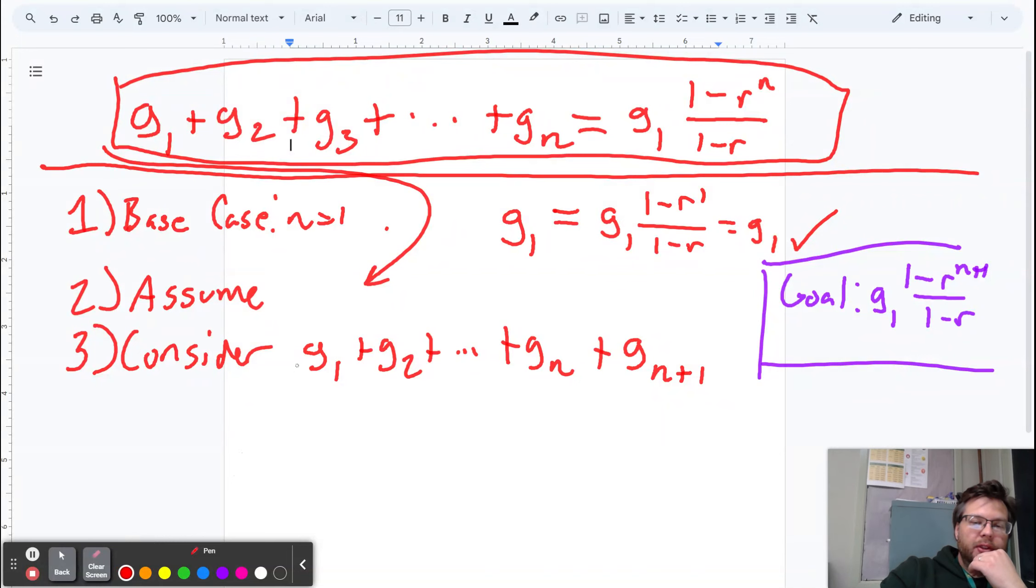All of this first n terms are the induction hypothesis. So I can replace them with g1, 1 minus r to the n over 1 minus r. Now I need the gn plus 1 to be similar to that. And so I'm going to write gn plus 1.